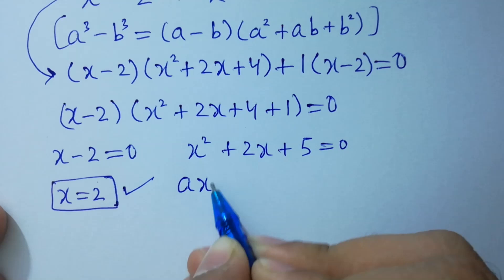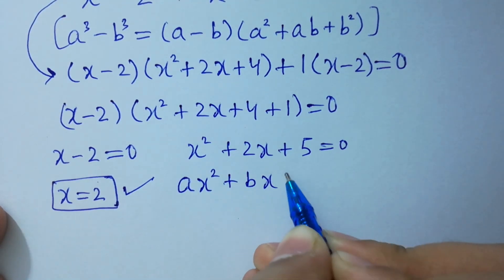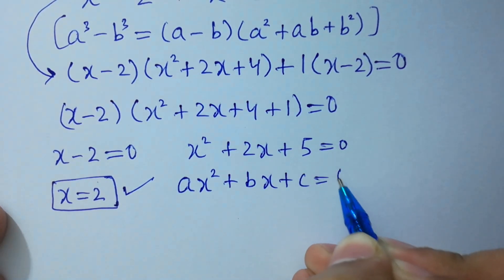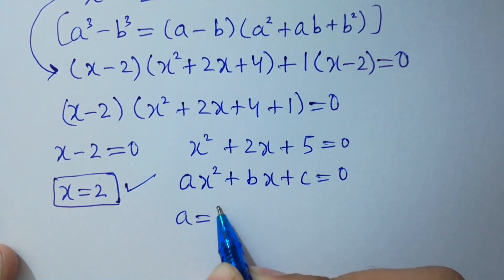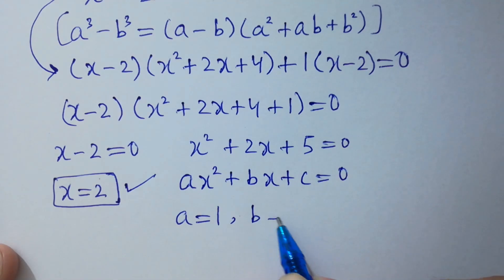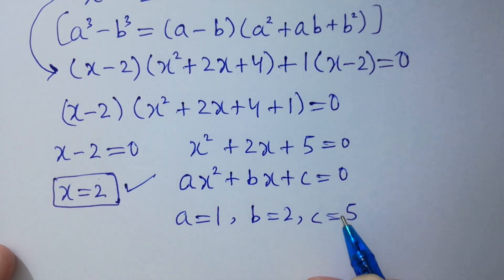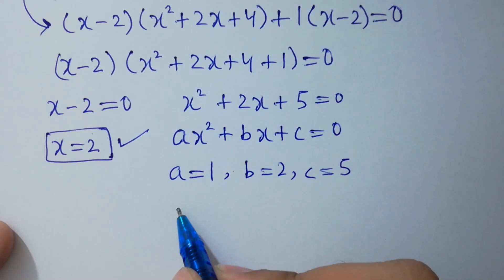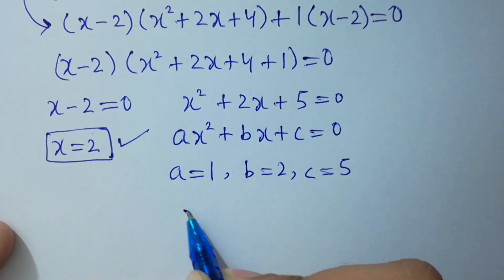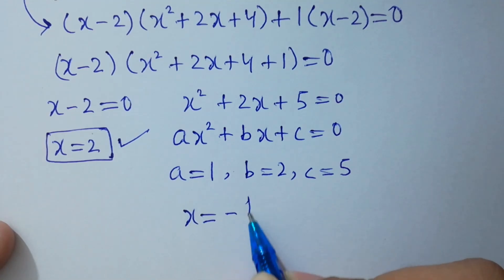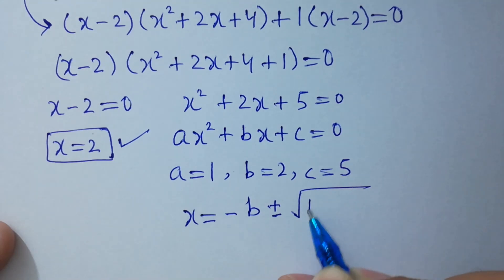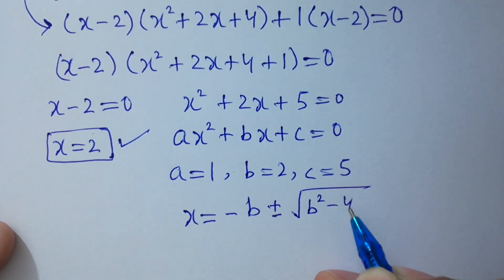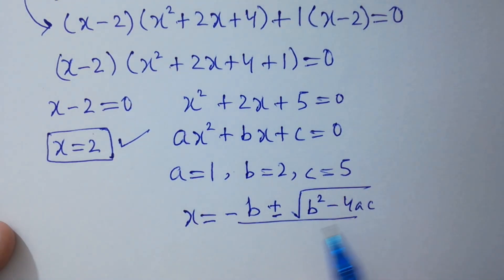Comparing x squared plus 2x plus 5 with ax squared plus bx plus c equals 0, we get a equals 1, b equals 2, c equals 5. We apply the quadratic formula: x equals minus b plus or minus square root of b squared minus 4ac, all over 2a.